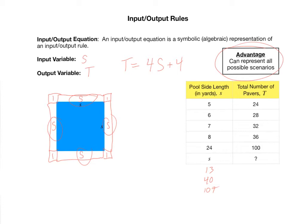So it shouldn't be terribly shocking that this plus four was here. Notice that when you went up by one, the number of pavers went up by four over here. So that is that four right there. But this input-output equation is so much more valuable than saying add four to the previous output, because I don't know what the number of pavers is for a pool of side length 107 yards without knowing the number of pavers for a pool of side length 106, and then 105 before that. So anytime you build off of the previous output, it's very limiting.